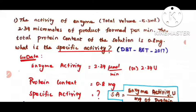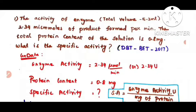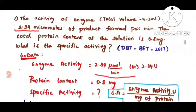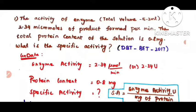Here the given data are: enzyme activity — enzyme activity is micromoles of product formed per minute, that is 2.34 micromoles per minute. Another unit of enzyme activity is 'U', that is units. So enzyme activity is 2.34 micromoles per minute, or you can write it as 2.34 U. Then they have given protein content of the solution, so protein content is equal to 0.8 mg.